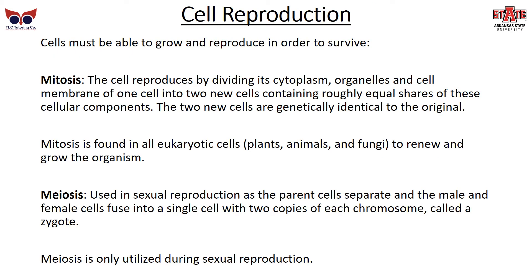Cells must be able to grow and reproduce in order to survive — that's one of the indicators of a living thing. There are two major ways cells reproduce. First is mitosis, where a cell reproduces by dividing its cytoplasm, organelles, and cell membrane into two new cells with roughly equal shares of all components. The two new cells are genetically identical — almost like cloning. Mitosis is found in all eukaryotic cells to renew and grow the organism, such as when your body makes new liver tissue or your bones grow longer. Every cell in your body is genetically identical.